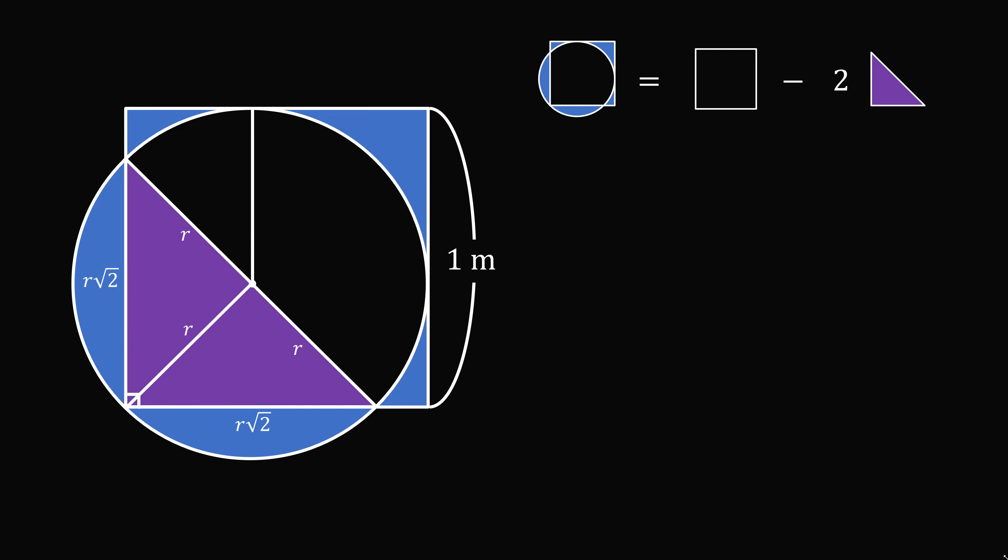Now, construct a line between the tangent point and the center of the circle. This will also be a radius of the circle. Do it for both of the tangency points. We now have a square, and the diagonal of this square will have length equal to r times the square root of two. We can now consider the diagonal of the square with side one. This diagonal will be equal to the square root of two, but it's also equal to r plus r root two.